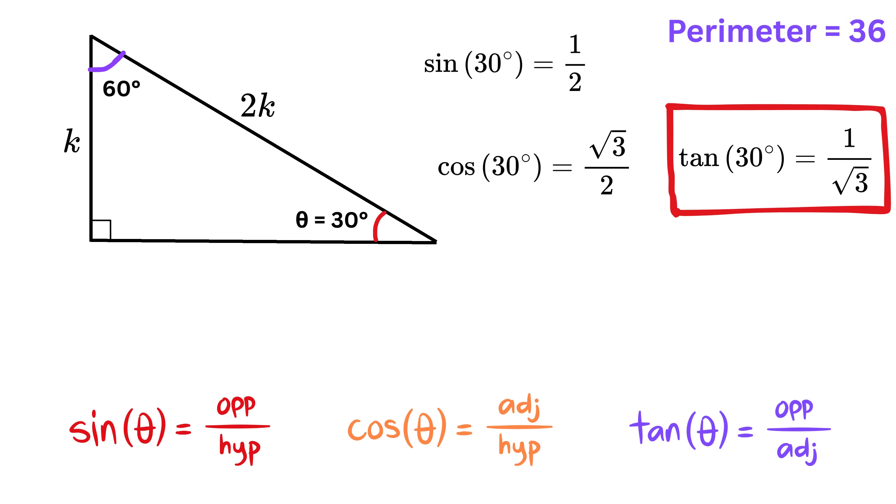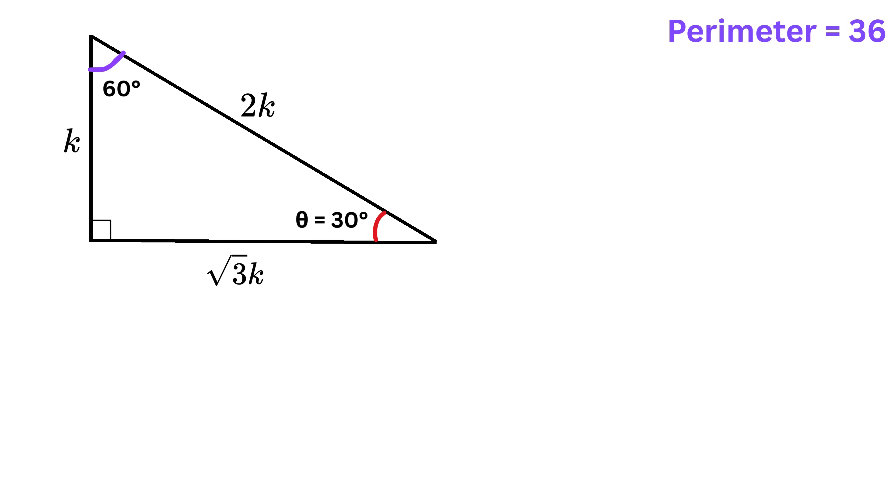Then tan of 30 degrees is 1 over the square root of 3, so this opposite over adjacent will be 1 over the square root of 3. Now if the opposite is k, then this adjacent side length will be simply root 3 times k. So the three side lengths are k, k times root 3, and k times 2.